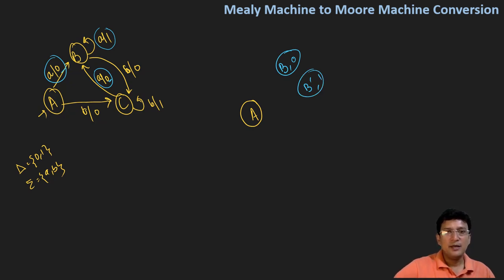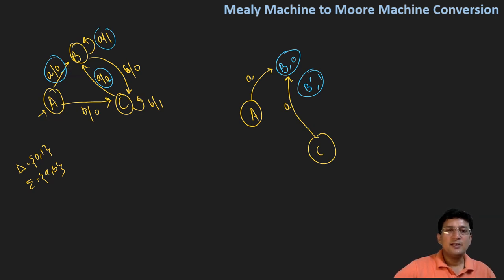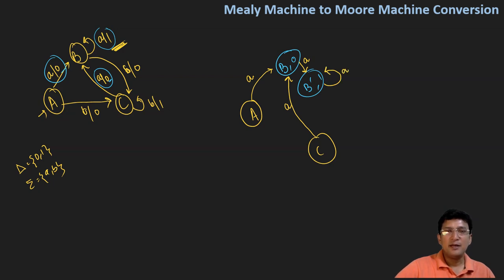So let's make the transitions. State A moves to B, which produces output zero — so I'll go to B on 'a'. Similarly, state C goes to B state producing output zero on 'a'. Since there is a self-loop in B which produces output one, I'll say that I go to B dash from B by taking input 'a', producing output one. The self-loop means any number of 'a's coming on B, so I make the transition from B dash remaining at B dash, since the expected output is one.